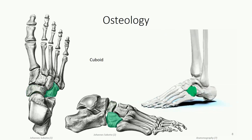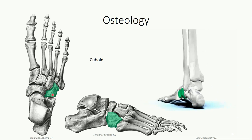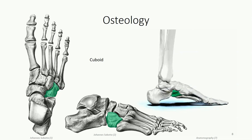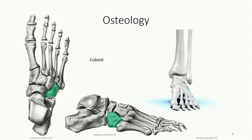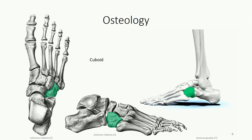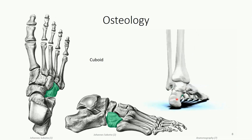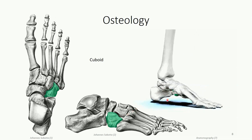The lateral-most of the tarsal bones is the cuboid. It has a prominent tubercle on the lateral aspect for muscle attachment. Distally, we see a groove which accommodates the fibularis longus tendon discussed in the previous lesson.